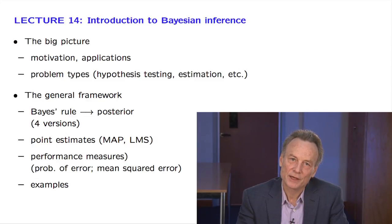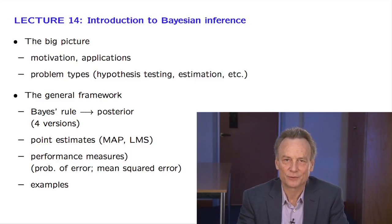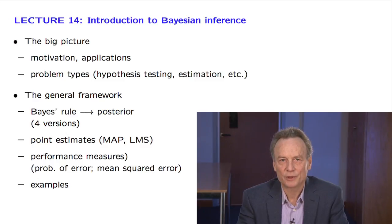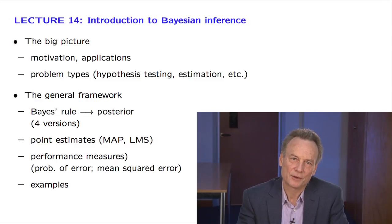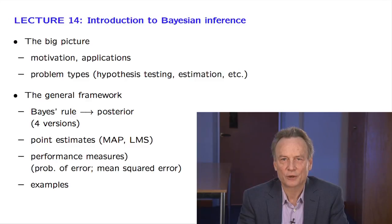If we want to summarize the posterior in a single number, that is to come up with a numerical estimate of the unknown random variable, we then have some options. One is to report the value at which the posterior is largest. Another is to report the mean of the conditional distribution. These go under the acronyms MAP and LMS. We will see shortly what these acronyms stand for.